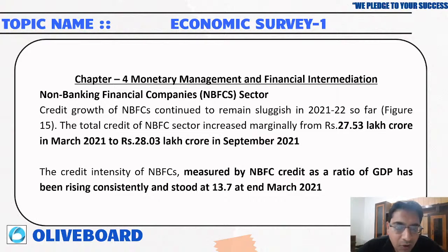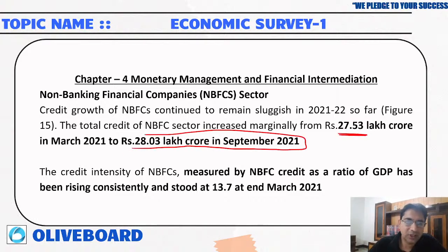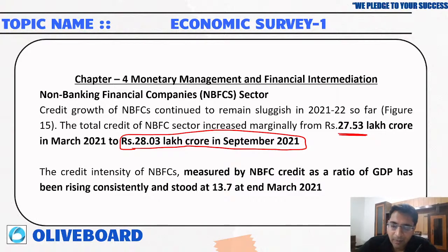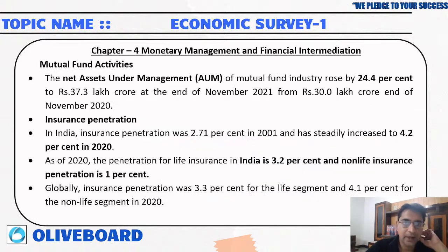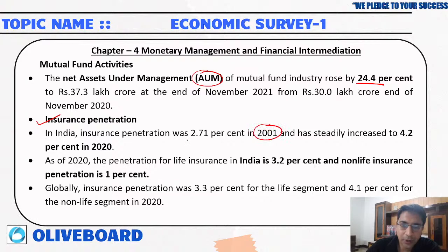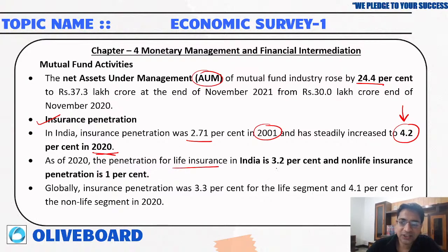NBFCs remained sluggish. Total credit of NBFCs increased marginally from rupees 27.53 lakh crore to rupees 28.03 lakh crore. The credit-to-GDP ratio stood at 13.7 percent. Net assets under management of mutual funds rose by 24.4 percent. Insurance penetration in India was 2.71 percent in 2000 and has increased to 4.2 percent in 2020. Life insurance penetration in India is 3.2 percent and non-life is 1 percent.